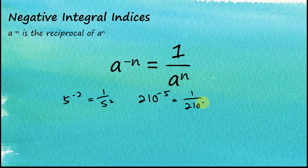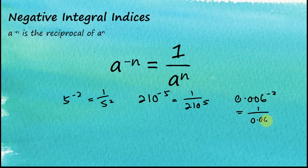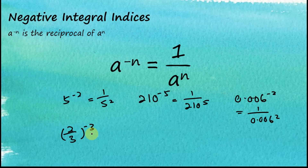0.006 to the power of negative 2 will be equal to 1 over 0.006 squared. How about fractions? For example, 2 over 3 to the power of negative 3 — the reciprocal of 2 over 3 is 3 over 2, so it becomes 3 over 2 to the power of 3.